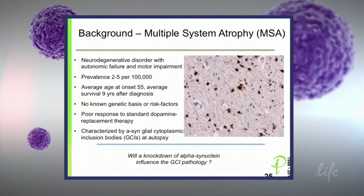Some background on multiple system atrophy, also called Parkinson's plus syndrome because it has additional features of Parkinson's disease. It's a neurodegenerative disorder with autonomic failure and motor impairment. The prevalence is two to five per 100,000. The average age at onset is 55, younger than Parkinson's disease, but it has a much more severe and faster course — average survival is nine years after diagnosis, versus 20 or more years for Parkinson's. There's no really known genetic basis or risk factors for MSA, with a few SNPs in the alpha-synuclein gene associated with the disease, and it rarely runs in families. Unfortunately, patients poorly respond to standard dopamine replacement therapies.